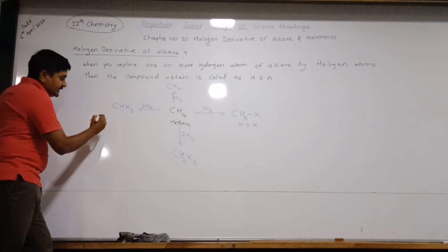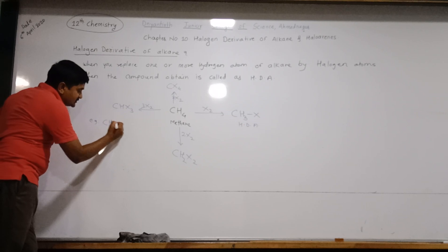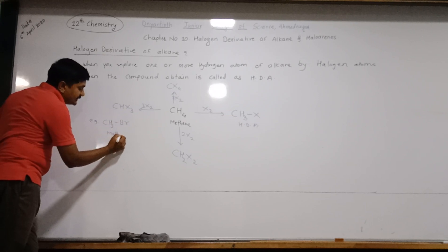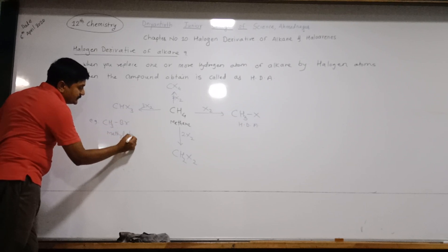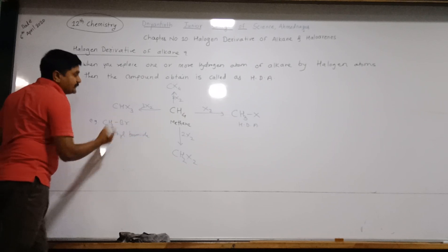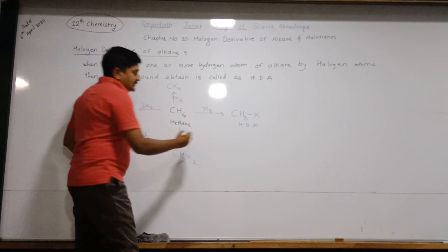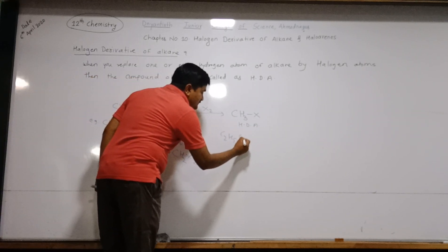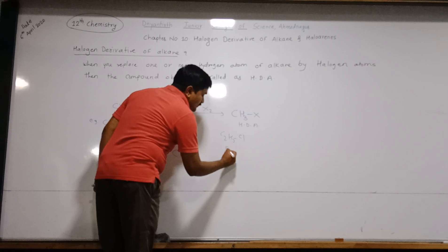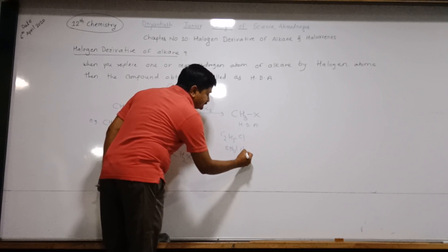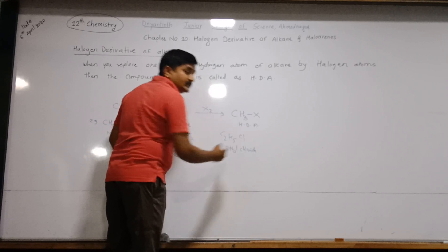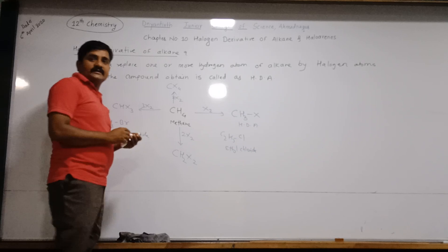The best example of a halogen derivative of alkane is CH3Cl, which is called methyl chloride.